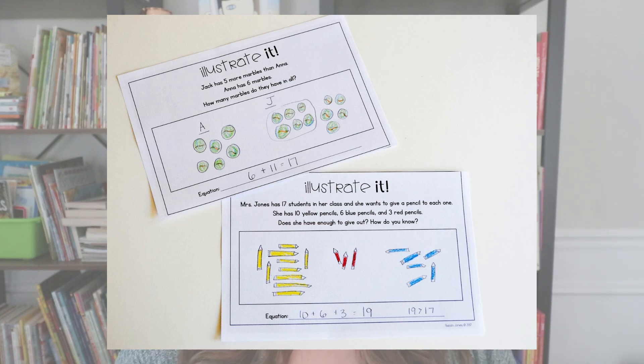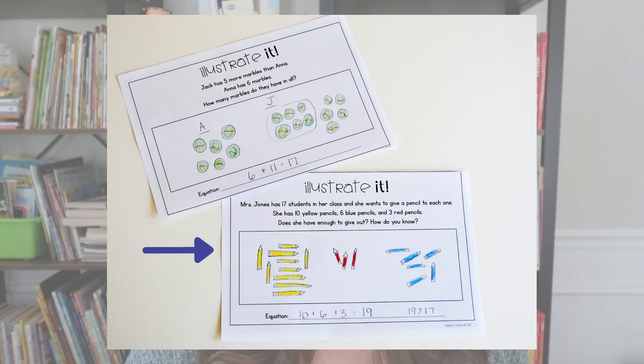When we do this, I like to show how it is done in person. We explain that Jack has five more than Anna, so we draw Anna's six, then draw Jack having the first six and then five more, and then add them together. Another problem says Mrs. Jones has 17 students and wants to give a pencil to each one — she has 10 yellow, six blue, and three red pencils. Does she have enough? These multi-step problems I would save for later. You'll want to start with regular joining problems so students get used to it. The story problems in this freebie I would save for a bit later in the year.